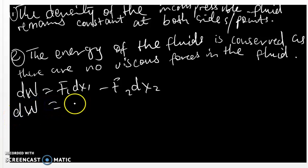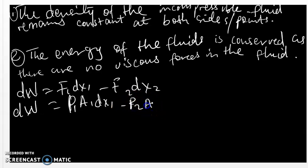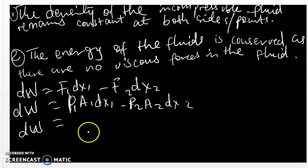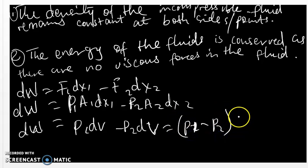The work done, delta W, will be P1 A1 dx1 minus P2 A2 dx2. Therefore, the work done delta W equals P1 dV minus P2 dV, which equals (P1 minus P2) times dV. We know that the work done on the fluid was due to conservation — a change in gravitational potential energy and a change in kinetic energy.